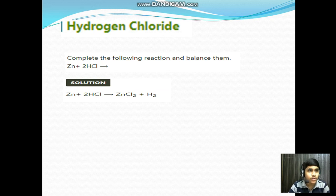Chapter: Hydrogen chloride. Complete the following reaction and balance it. Solution: Zinc plus hydrochloric acid gives rise to zinc chloride plus hydrogen.